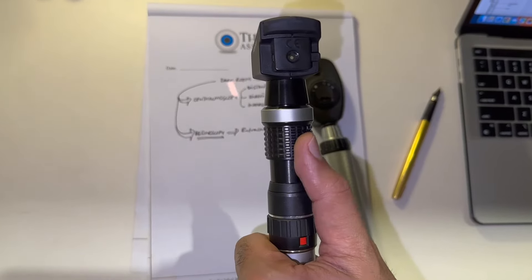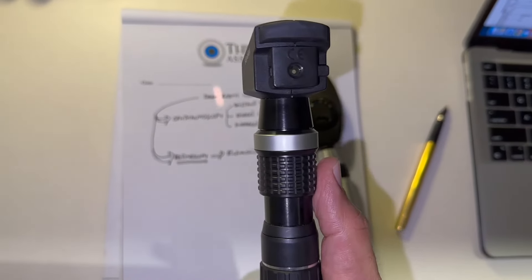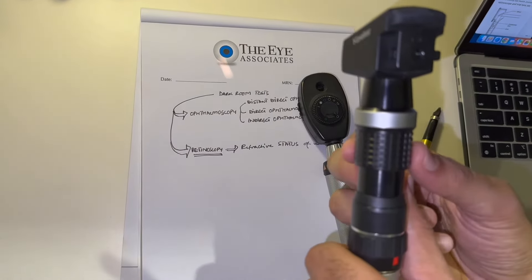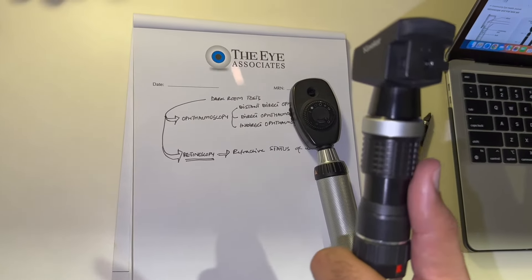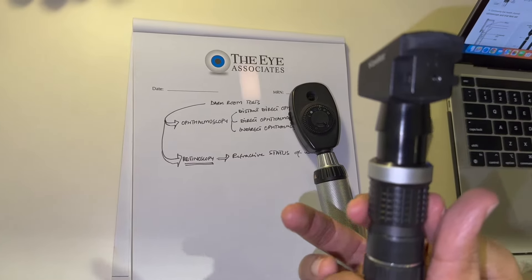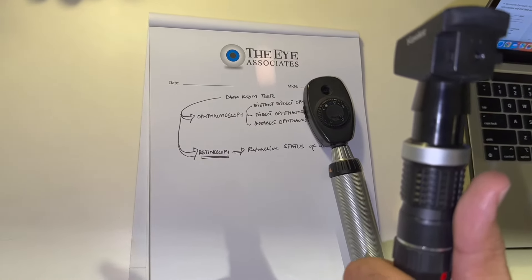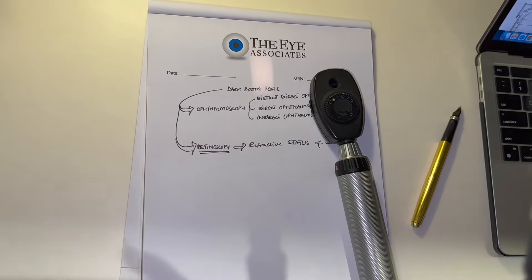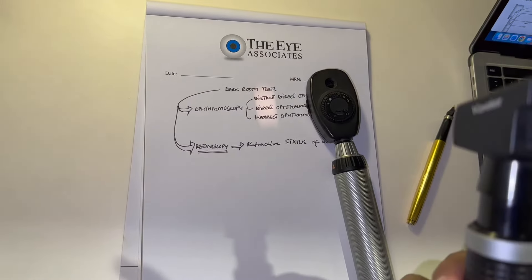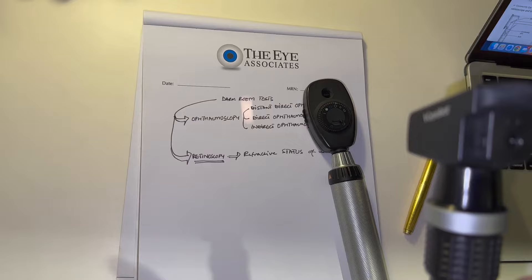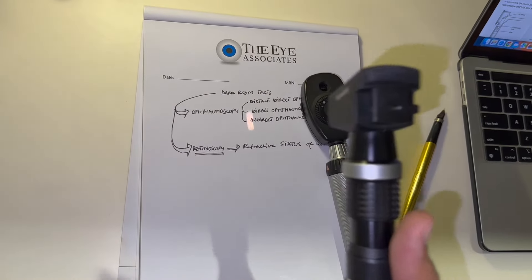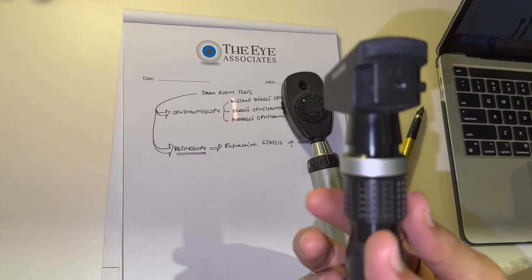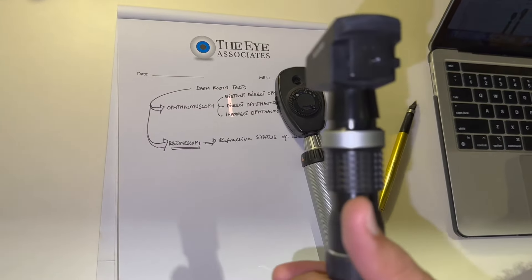By rotating the neck you can change the streak's direction from vertical to horizontal. If you move the sleeve all the way up, you will have a concave mirror; if you move it all the way down, you have a plane mirror. Moving it forward and back changes the luminance. I like to keep it right in the middle where the brightness does not change.